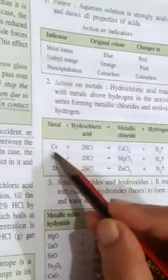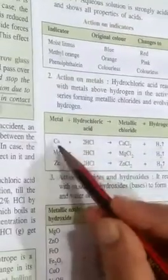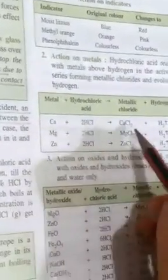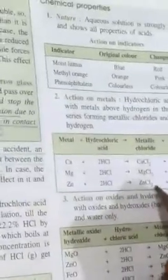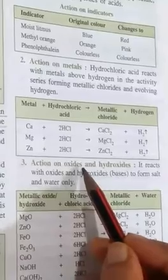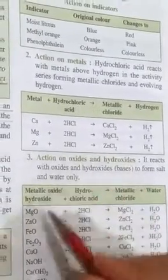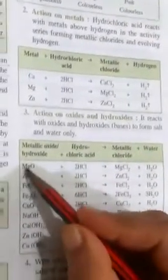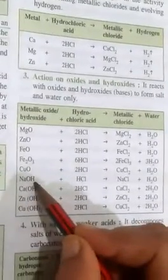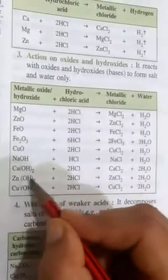For example, calcium, magnesium, and zinc react to produce calcium chloride, magnesium chloride, and zinc chloride with hydrogen gas formed. Action on oxides and hydroxides: these are the oxides and these are the hydroxides - sodium hydroxide, calcium hydroxide, zinc hydroxide, and copper hydroxide.